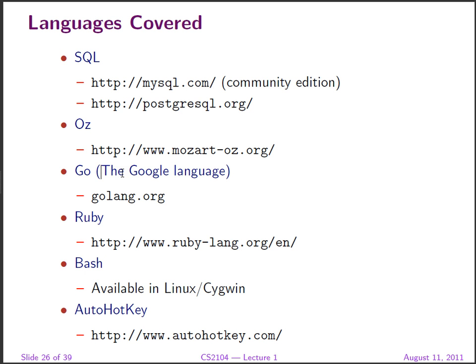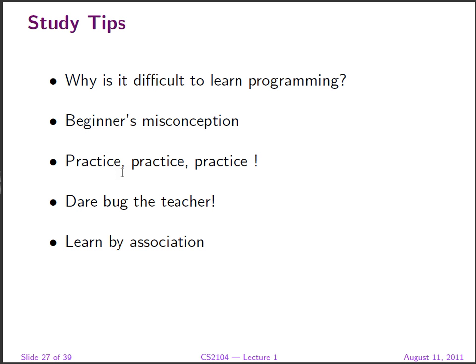We'll look at Ruby, which unlike other programming languages has regular expressions as first-class values — a unique feature. When we talk about grammars and regular expressions, we'll use Ruby as an example because it has features that make learning regular expressions very easy. Bash is also available in Linux and Cygwin. AutoHotkey is the only language I know that is specifically a language for event-driven programming — most other platforms have libraries but not dedicated languages for it.